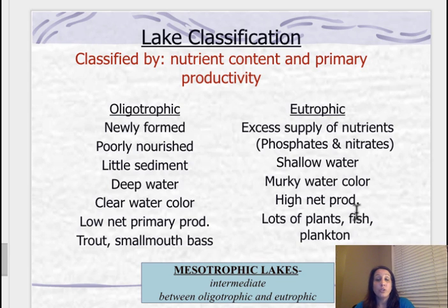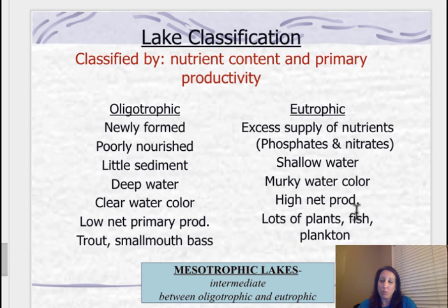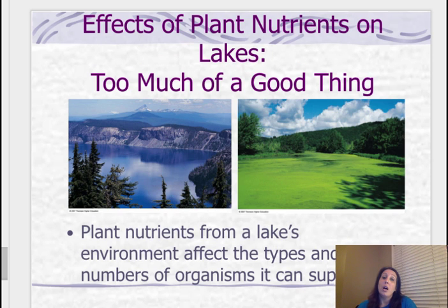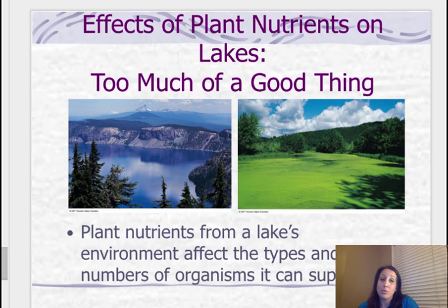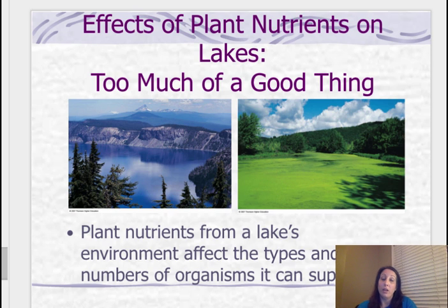Think of algal blooms or pools where it's green along the surface. Here's a picture: on the left you have something oligotrophic — low levels of nutrients — and on the right you have too much, which would be hyper-eutrophic, though the AP exam just calls it eutrophication. It looks green — would you want to jump in that? I wouldn't.